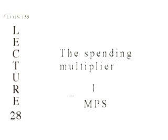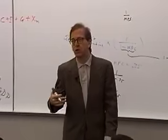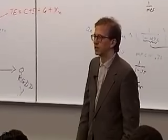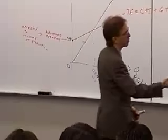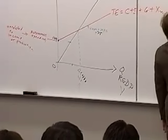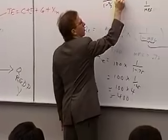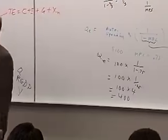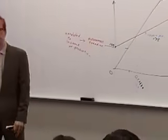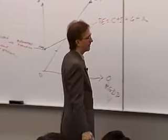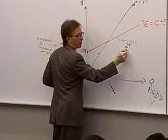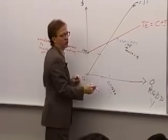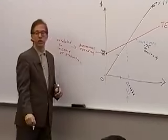You should be familiar with calculating multipliers. If the MPC is 2/3, then 1 over (1 minus 2/3) equals 1 over 1/3 equals 3 — so the multiplier is 3. But beyond just the multiplier, as in this example where the MPC of 0.75 gives a multiplier of 4, you also need to multiply that 4 by total autonomous spending.